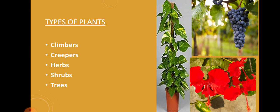Now, the next topic is types of plants. Students, we see many types of plants around us. These are of different sizes. Some are big, some are small. So there are five different types of plants. They are climbers, creepers, herbs, shrubs, and trees. These are the different types of plants.